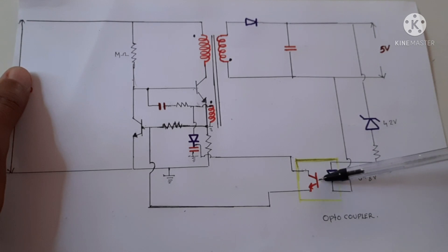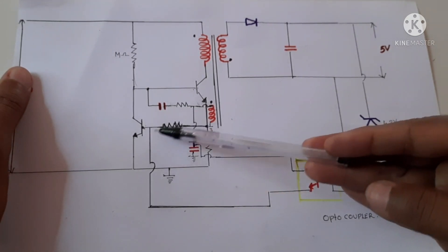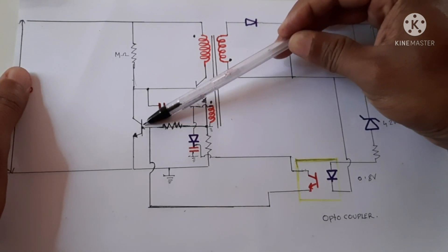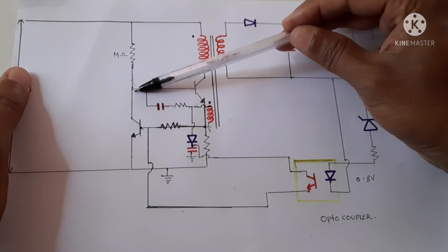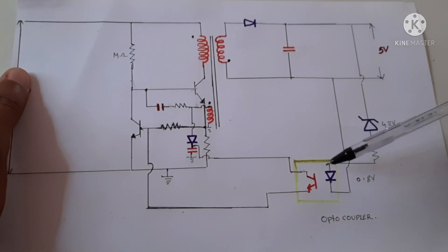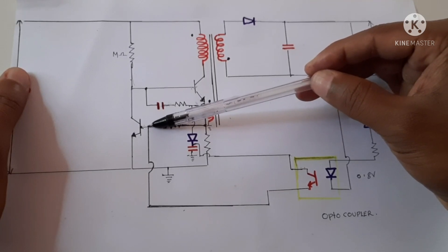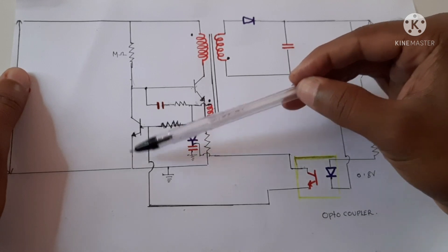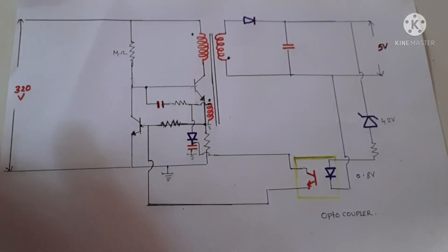When the LED glows, the base of the optocoupler transistor gets current and this transistor turns on. When this transistor turns on, this positive voltage comes to this point, forward biasing it. When this transistor is forward biased, this point is at ground. This ground is now available at the base of the main transistor, turning it off. So when the output voltage reaches 5 volts, the main transistor is switched off — this is how it regulates the output voltage.